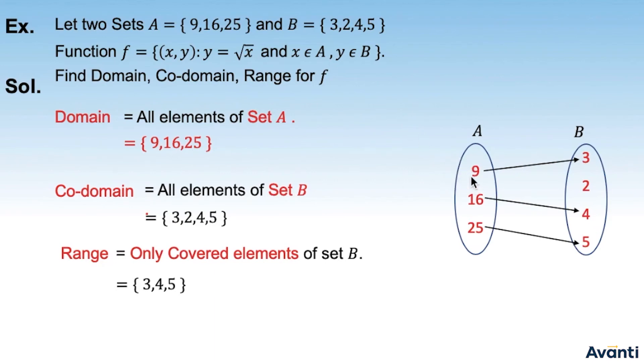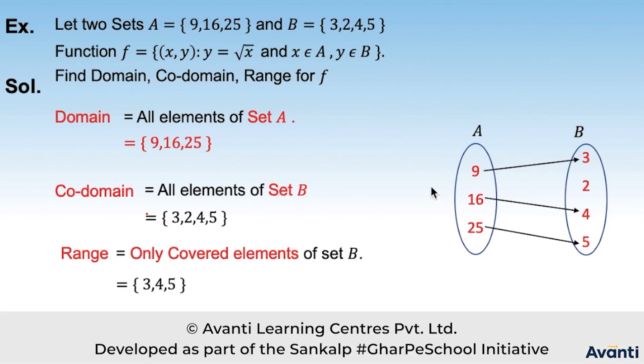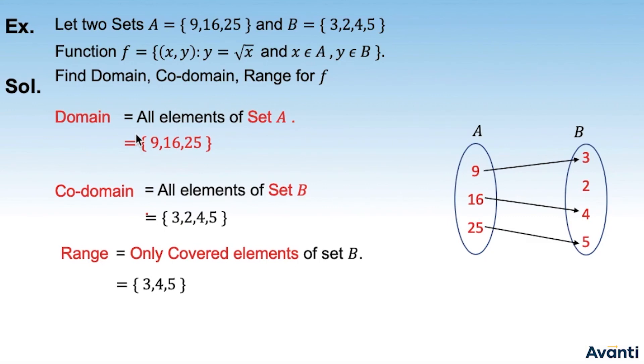Hence, 9 ka positive square root 3, 16 ka 4 or 25 ka 5. To domain ho gya is function ka all elements of set A. Kyunki function hai, to set A ke saare elements cover ho na zharoori hai. = {9, 16, 25}.